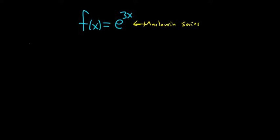So to find the Maclaurin series for e to the 3x, you start by writing down the Maclaurin series for e to the x. So e to the x is equal to the infinite sum, as n runs from 0 to infinity of x to the n over n factorial. So that's the first step.